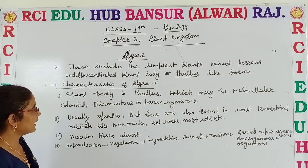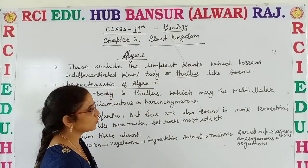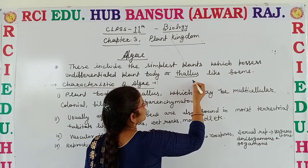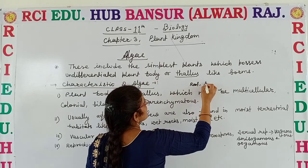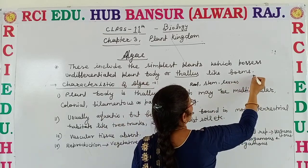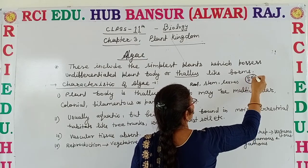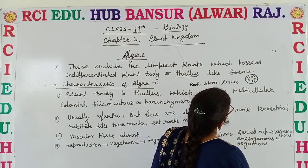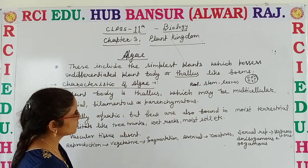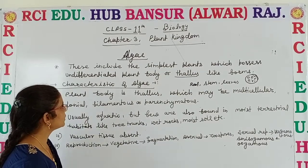Algae are the simplest plants which possess an undifferentiated plant body. What is the meaning of undifferentiated plant body, or thallus? It means the plant body is not differentiated into root, stem and leaves. It is thallus-like. For example, if we talk about Volvox, it has a round shape, and inside it has daughter and mother colonies. So we are not able to identify root, stem and leaves — it is a thallus-like form.